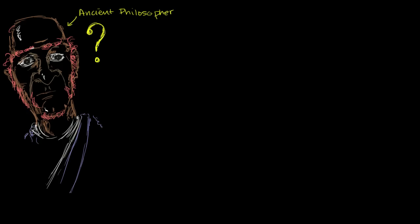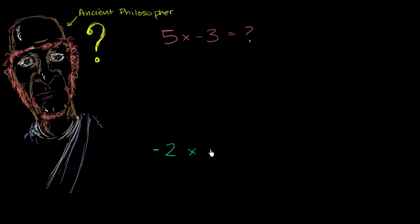For example, you aren't quite sure what should happen if you were to multiply 5 times negative 3. You're not quite sure about this just yet. You're also not quite sure about what would happen if you multiply two negative numbers, so let's say negative 2 times negative 6. This is also unclear to you.